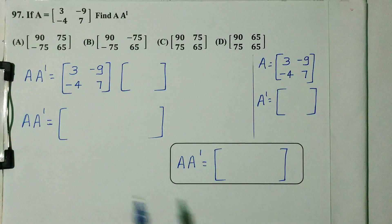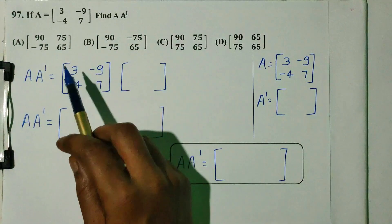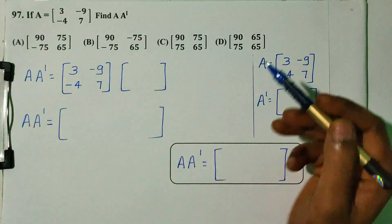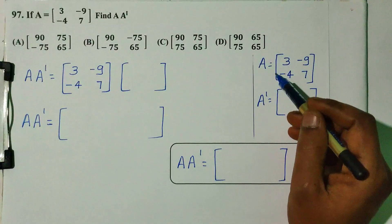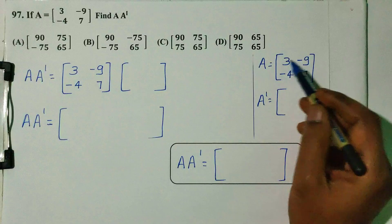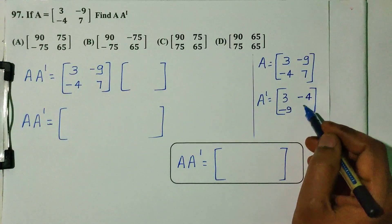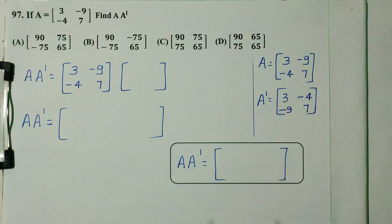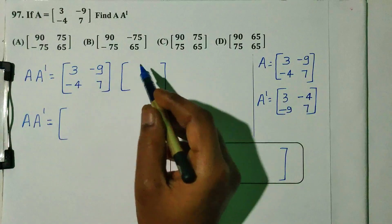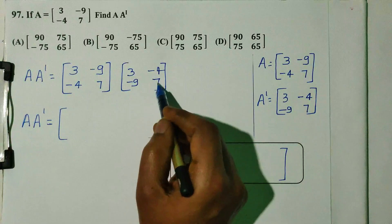Question number 97. If A is equal to [3, -9; -4, 7], find A×A' (A times A transpose). A transpose swaps rows into columns: first column becomes [3, -4], second column becomes [-9, 7], so A' = [3, -4; -9, 7].